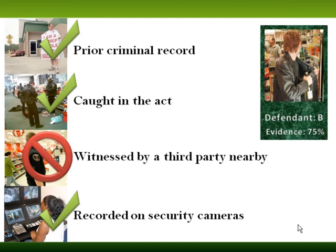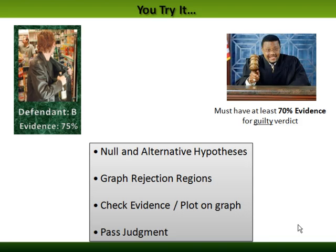Take for example this next alleged criminal — Defendant B. They do have a prior criminal record, they were caught in the act, they were not witnessed by a third party, but they were recorded on a security camera. Again, we have 75% of the evidence in our basic example. You should go through the process yourself and remember the steps: first you need a claim, then once you have that claim you define hypotheses, you graph rejection regions, you check the evidence and plot it on a graph, and then you can pass judgment. This is basic hypothesis testing. As we move into material about testing for means and testing for proportions, we'll go through this again. But this is the basic idea of what hypothesis testing is.